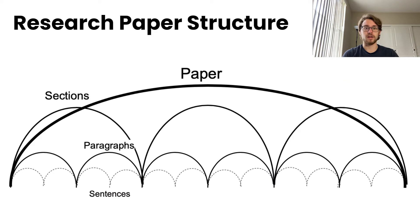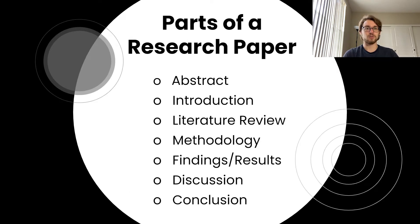Regardless of the genre of writing, any large paper with sections can be thought of as a series of nested arcs. In graduate school, these arcs may become longer and longer, and more intense research is needed to fill a research paper. In short, these arcs become more complex. In general, graduate research papers will consist of the following sections: an abstract, introduction, literature review, methodology, findings or results, discussion, and conclusion. Please note that different disciplines, publishers, courses, or even professors may have unique requirements beyond these base sections.